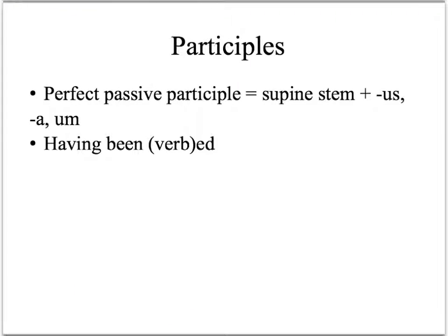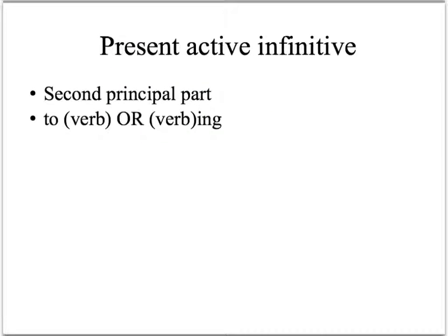As you work further down the synopsis, in the participle section, we still need to put in the perfect passive participle — again from the supine stem at the top of the sheet, plus -us, -a, -um. The present active infinitive, a little bit further down the synopsis sheet, is always the second principal part, the one that usually ends in -re.